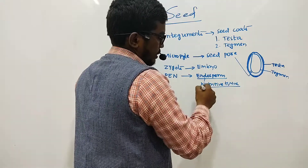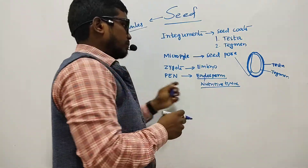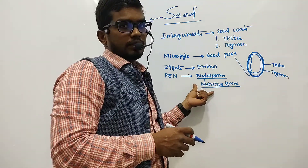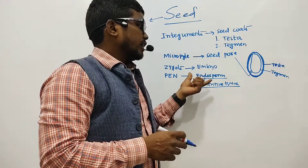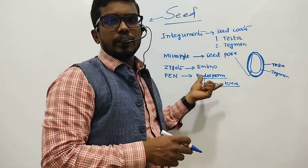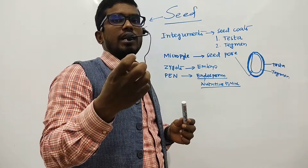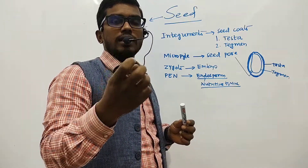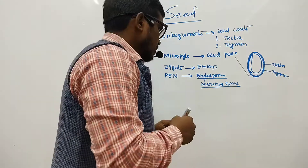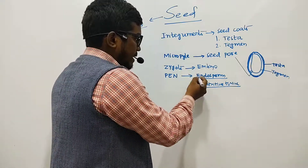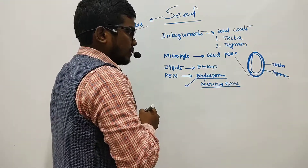Endosperm is a nutritive tissue important for providing nutrition to the developing embryo, especially in most monocotyledonous plants. In dicotyledonous plants, endosperm is less significant because the fleshy cotyledons store the reserve food materials instead.